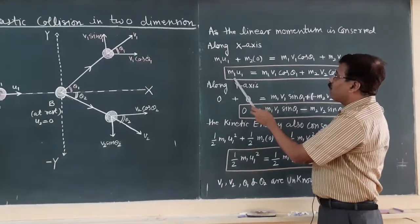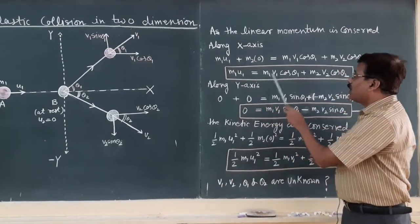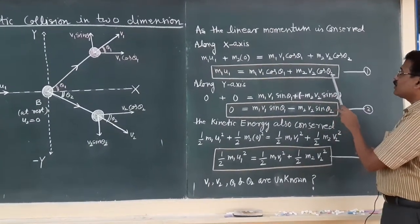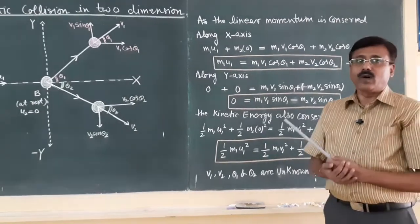When you simplify you have m1 u1 is equal to m1 v1 cos theta 1 plus m2 v2 cos theta 2, say this is equation number 1.